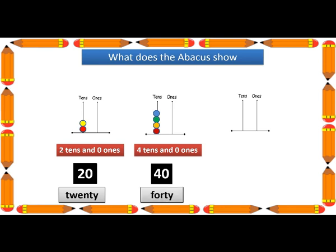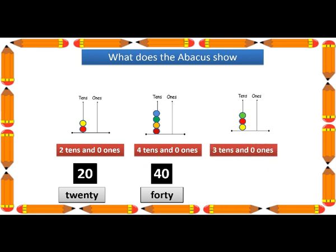In the third abacus, we have no bead in the one's rod. But we have one, two, three — three beads in the tens rod. Three tens and zero ones. Three tens and zero ones make thirty.